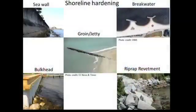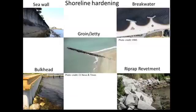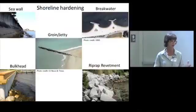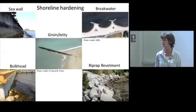Now let's consider shoreline hardening and its adverse impacts compared to the living shoreline approach. Approaches used include seawalls, bulkheads, groins or jetties, riprap revetments, and breakwaters. There is not much coastal habitat associated with any of these structures — they don't coexist well with the maintenance of coastal habitats.